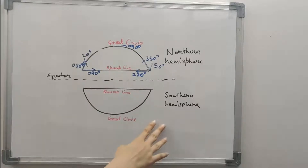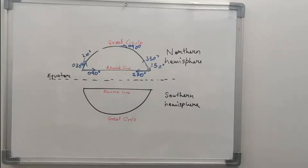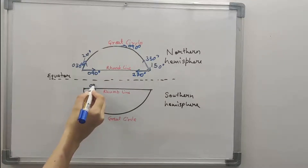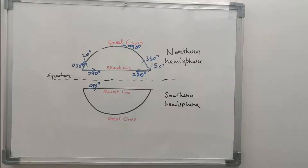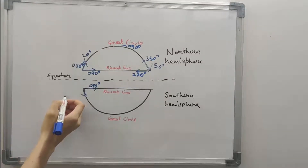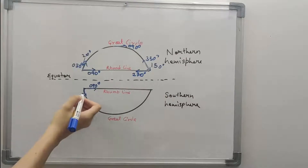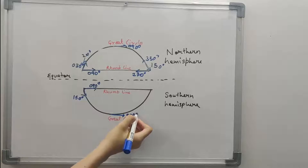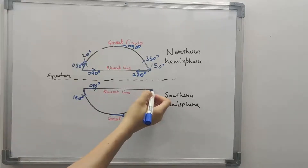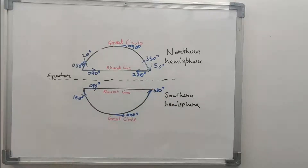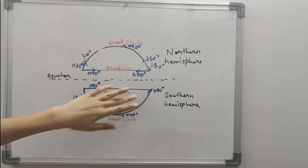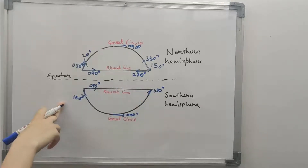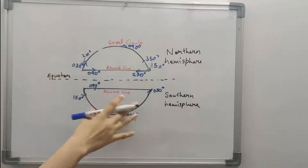Now let's look at what happens in the Southern Hemisphere. Consider a track from left to right: the rhumb line track would again be 090 degrees, and the great circle track starts with an initial direction of about 150 degrees, then curves to 090 degrees, and finishes at about 030 degrees. Here the track direction is decreasing — from 150 it went to 030. If we travel in a westerly direction in the Southern Hemisphere, the track direction would increase.